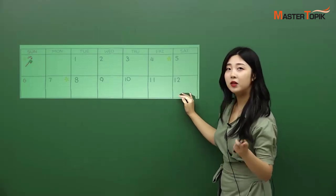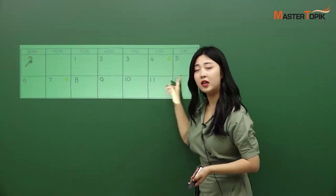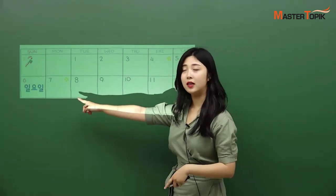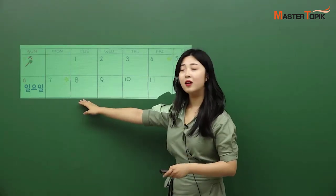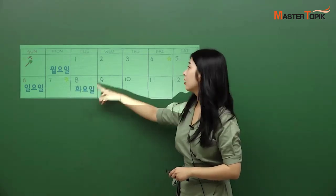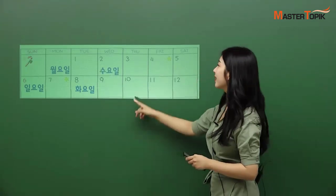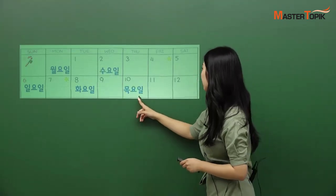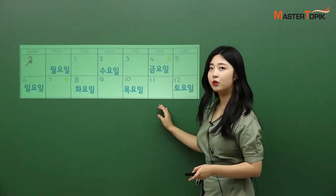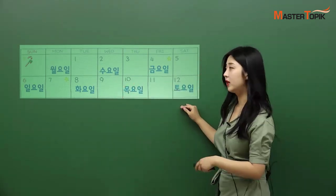Let's briefly review what we learned from the last class. Do you remember all of the names of the day? Let's go from Sunday: 일요일, 월요일, 화요일 — what is for Wednesday? 수요일, 목요일, 금요일, and then 토요일. So, we all know 일요일, 월요일, 화요일, 수요일, 목요일, 금요일 right now.